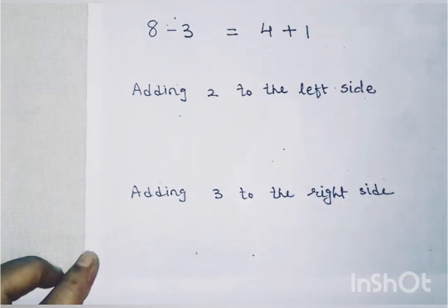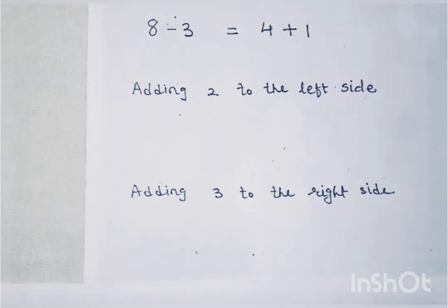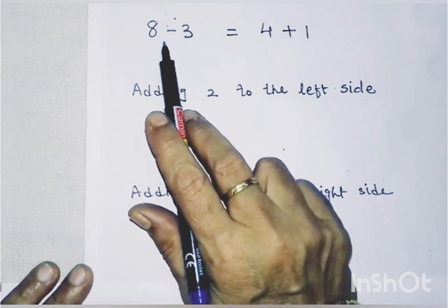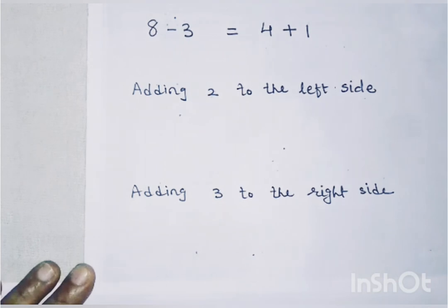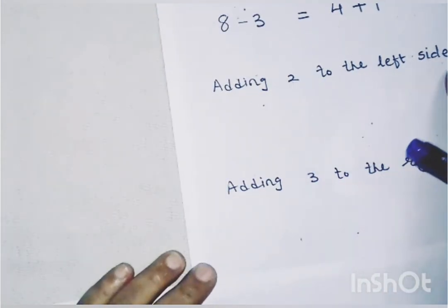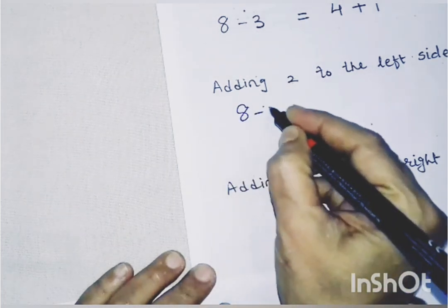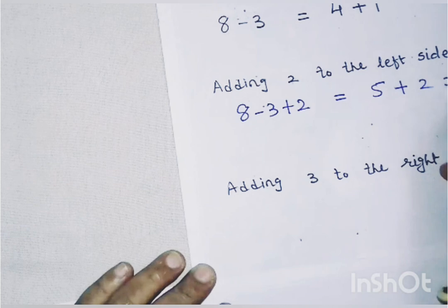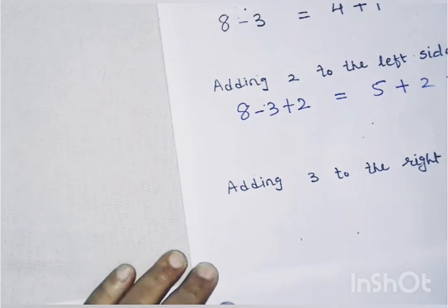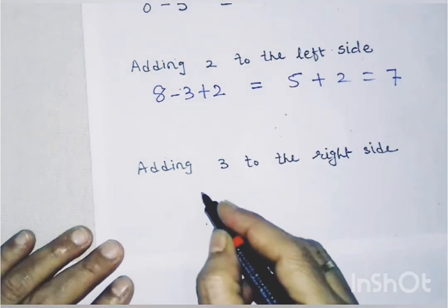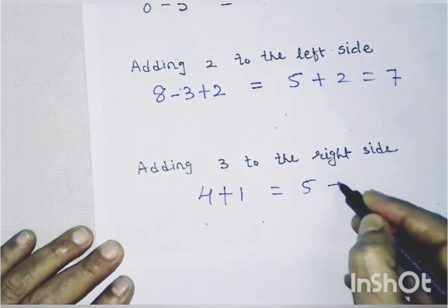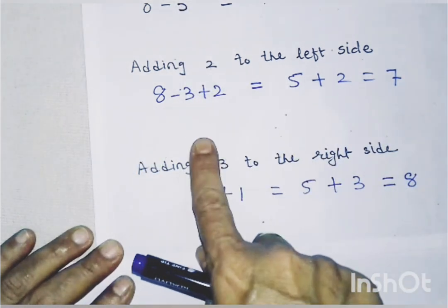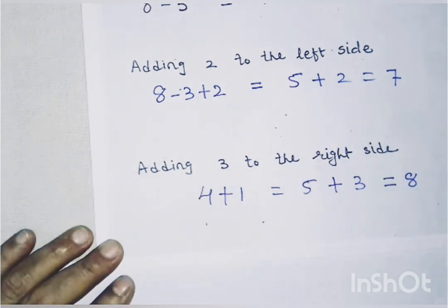Now let us see what happens if we add different numbers to both sides. Using the same equation 8 minus 3 equals 4 plus 1: I am adding 2 to the left side, giving 8 minus 3 plus 2 equals 7. But I am adding 3 to the right hand side, giving 4 plus 1 plus 3 equals 8. So if we add different numbers, the values change — the equation is no longer balanced.